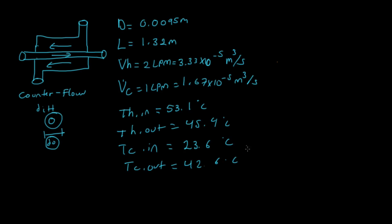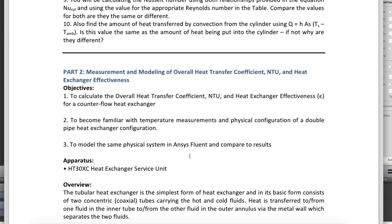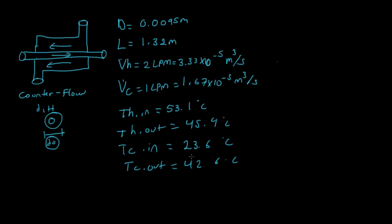Now, what are we being asked for? They want the overall heat transfer coefficient, the number of thermal units, and the heat exchanger efficiency for a counter-flow heat exchanger. So we want the overall heat transfer coefficient, number of thermal units, and heat exchanger efficiency — all unknowns. Now we've stated the problem, let's go ahead and solve it.